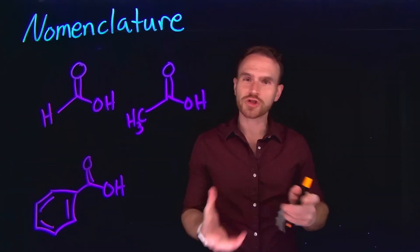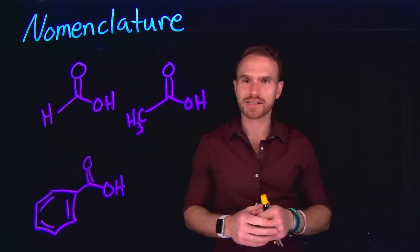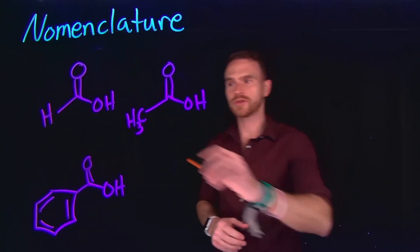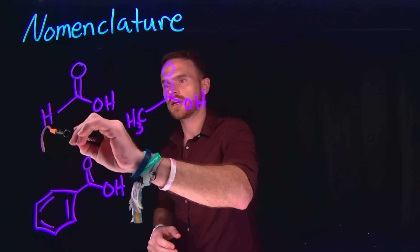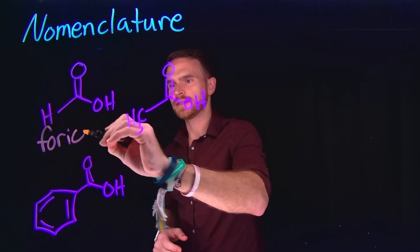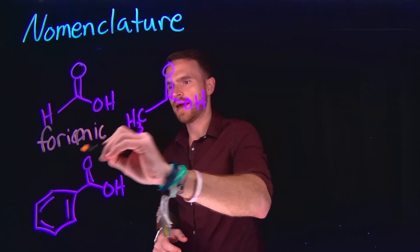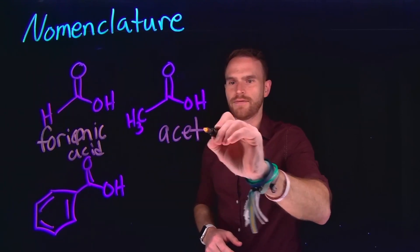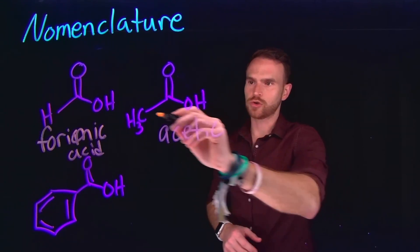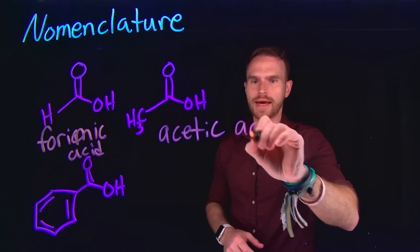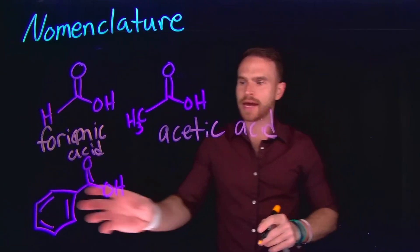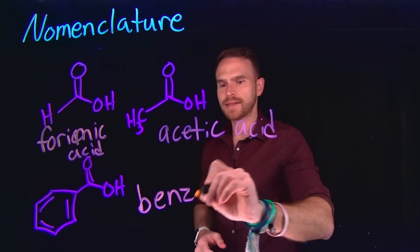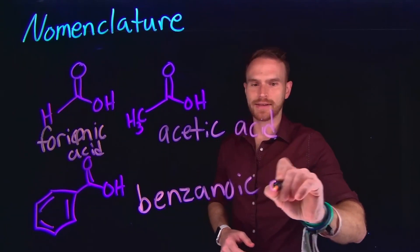Many carboxylic acids are so ubiquitous that IUPAC actually accepts a more common name. Examples include formic acid, acetic acid which we find in vinegar, and a benzene ring with a carboxylic acid on it is called benzoic acid.